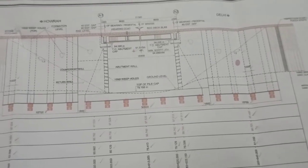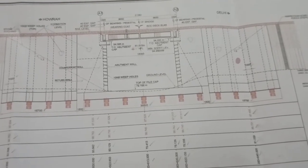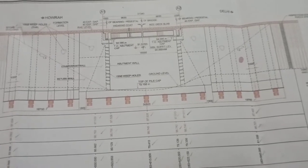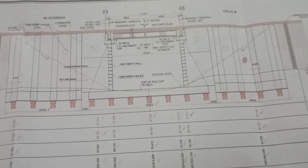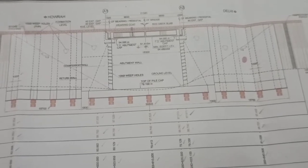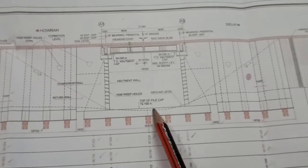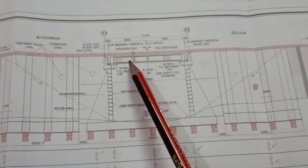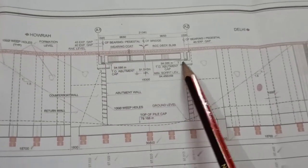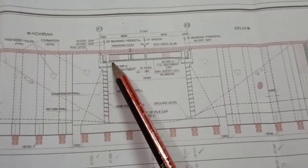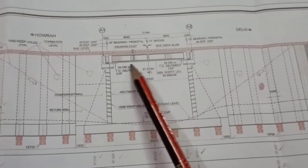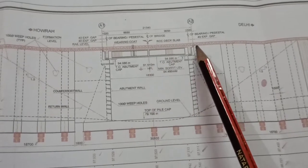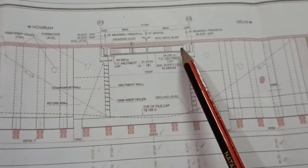Good afternoon everyone. In this video we'll see a major railway bridge drawing - how to study it and what are the different components in a major railway bridge. First, let us see the longitudinal elevation of the railway bridge. This is a PSC eye girder bridge. Here is the longitudinal eye girder. At the center we have one intermediate cross girder and at the ends we have two end cross girders.